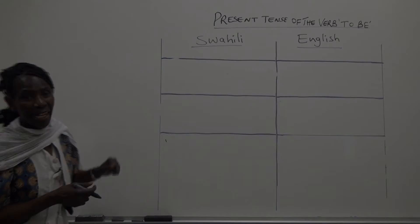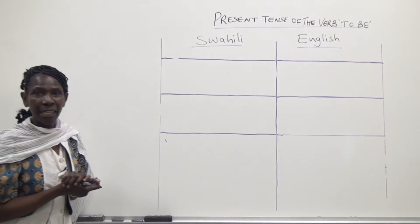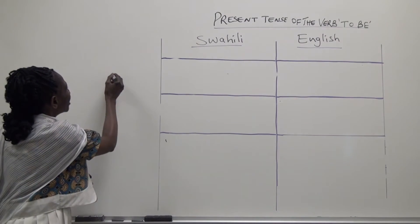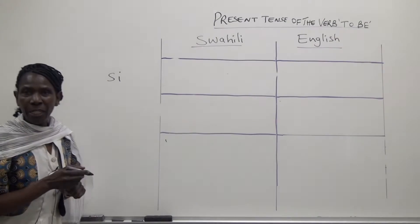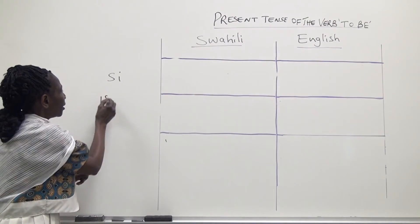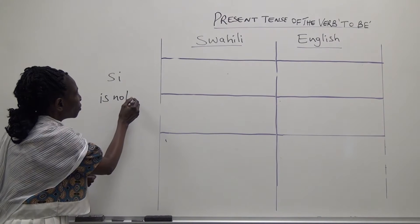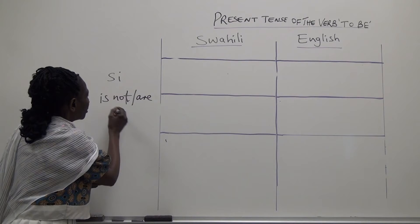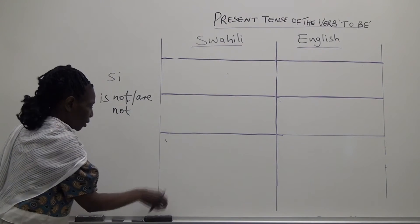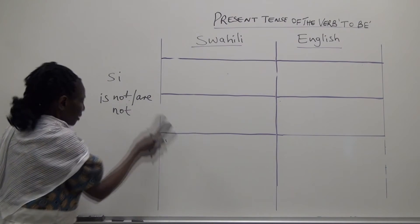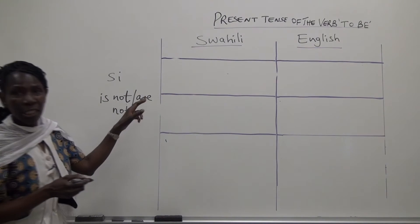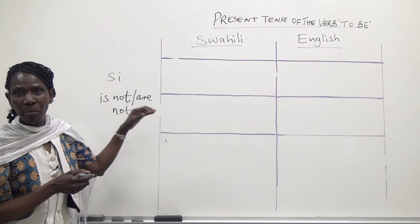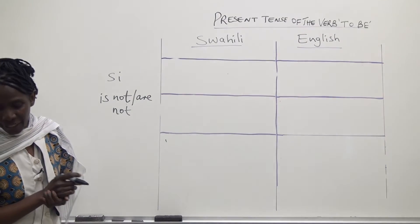The negative form of the verb to be in Swahili uses the word 'si', which expresses the English 'is not' or 'are not'. Let's look at the examples we used previously to see how we use this same verb to be in the negative sense.